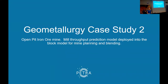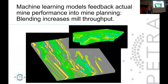The second case study is from an open pit iron ore mine with a mill throughput optimization opportunity. The view was they could increase throughput simply by getting a more consistent ore blend, and there is good evidence that reducing variability alone yields improvement. Deploying the model into the block model lets you see the stratigraphy — the different colors correspond to predicted throughput, reflecting the different geological units.